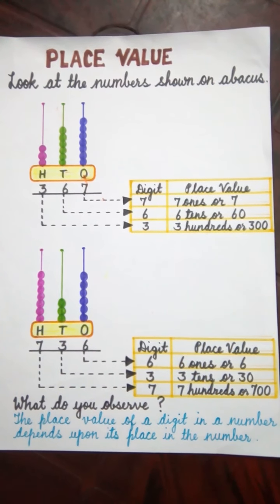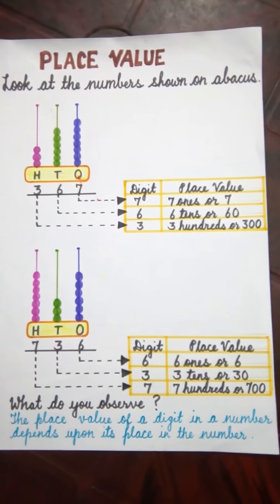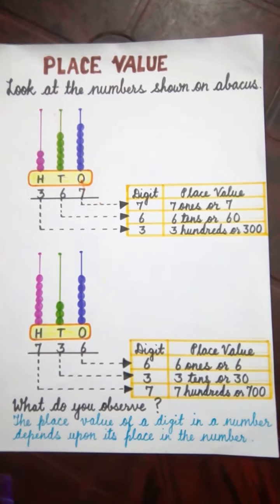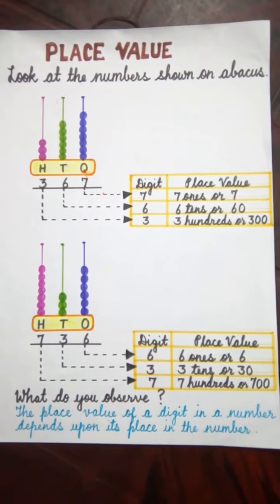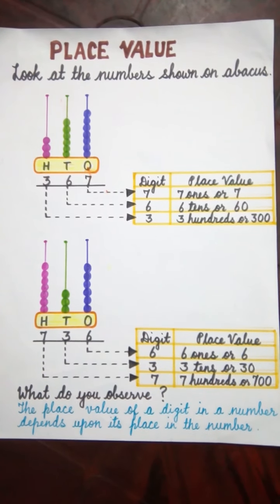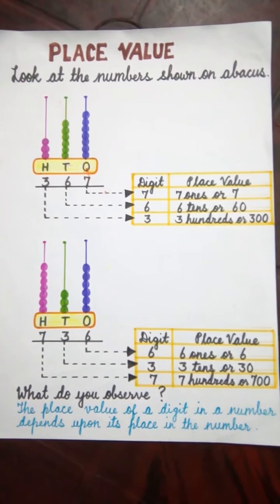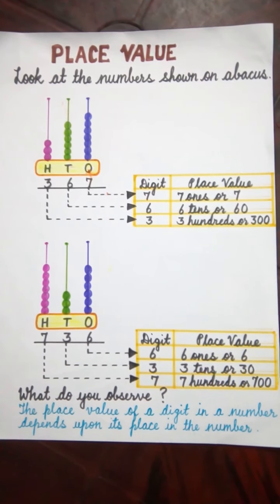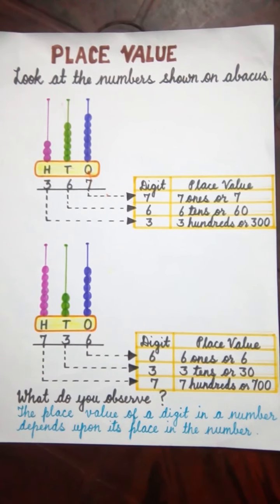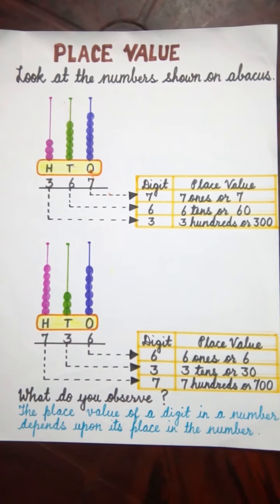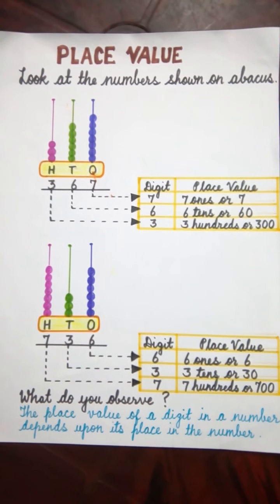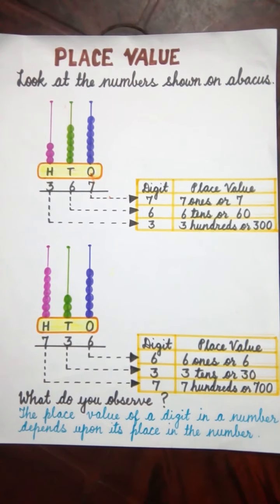Now children, what do you observe from here? The place value of a digit in a number depends upon its place in the number. So children, I hope we have understood the place value of a number.